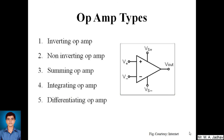Just refreshing from the last presentation: this is the symbolic representation of an operational amplifier. It has one inverting terminal and one non-inverting terminal — these two are the inputs. Vout is its output, and Vs+ and Vs- are the power supply for the op-amp. The gain of the op-amp is given by Vout divided by Vin, which applies to an ideal op-amp.